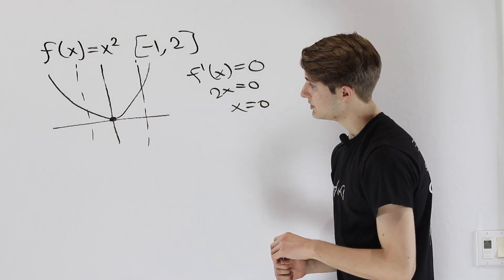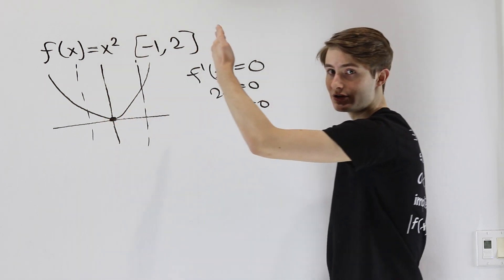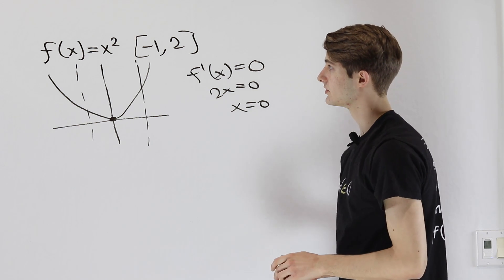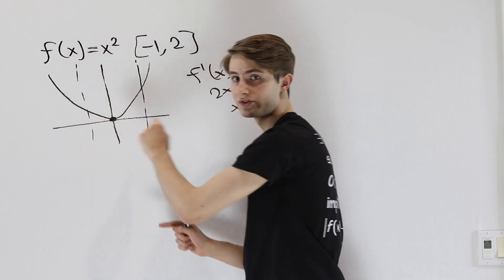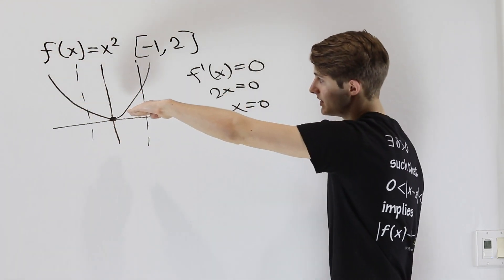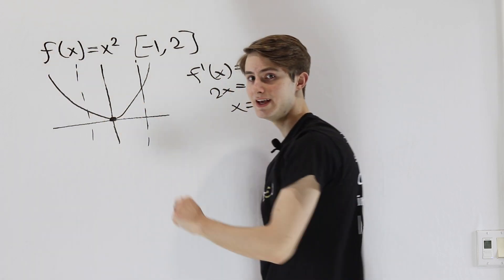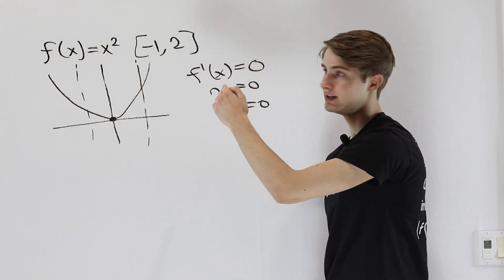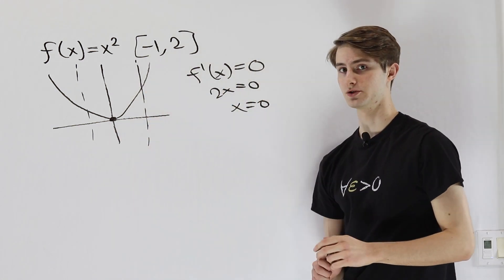We see that the function goes from decreasing on one side to increasing on the other side, and that's what a local minimum means. The function value has to be bigger on both sides of that point. On the left, because the function is decreasing, it's going from smaller to bigger values in the negative direction. Similarly, when it's increasing on the other side, it's getting bigger in the positive direction, so therefore we have a local minimum.